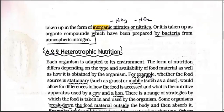Nitrogen is taken up in the form of inorganic nitrates (NO3) and nitrites (NO2) - remember these formulas. It is taken up through organic compounds prepared by bacteria from atmospheric nitrogen. You will remember Rhizobium bacteria that live in root nodules of leguminous plants. Bacteria like Nostoc, Anabaena, and Rhizobium absorb some amount of nitrogen from the 78% atmospheric nitrogen, create nitrogenous compounds within the soil, and the plant then takes those compounds up with water. So that was all regarding plant nutrition.